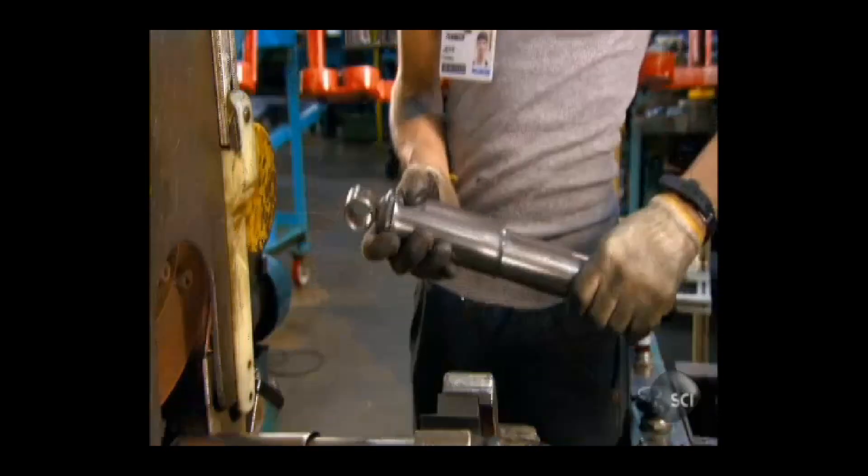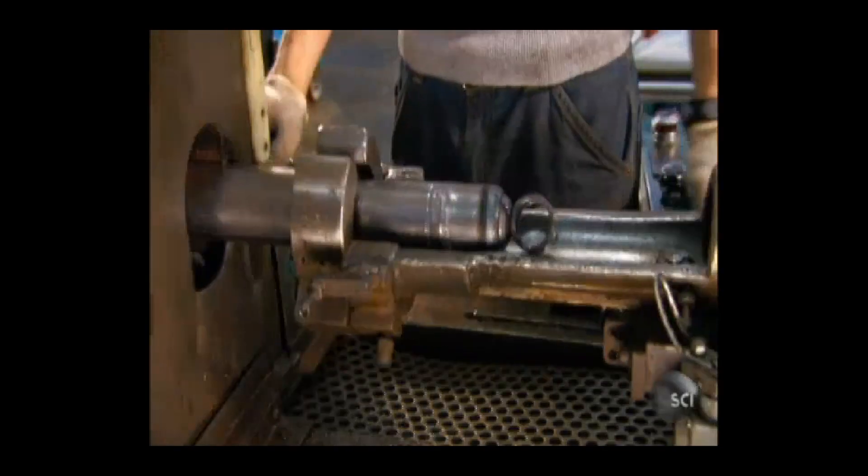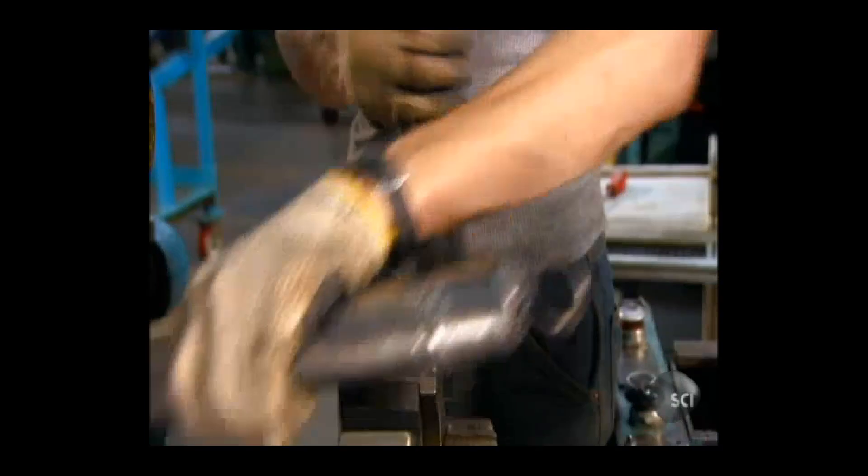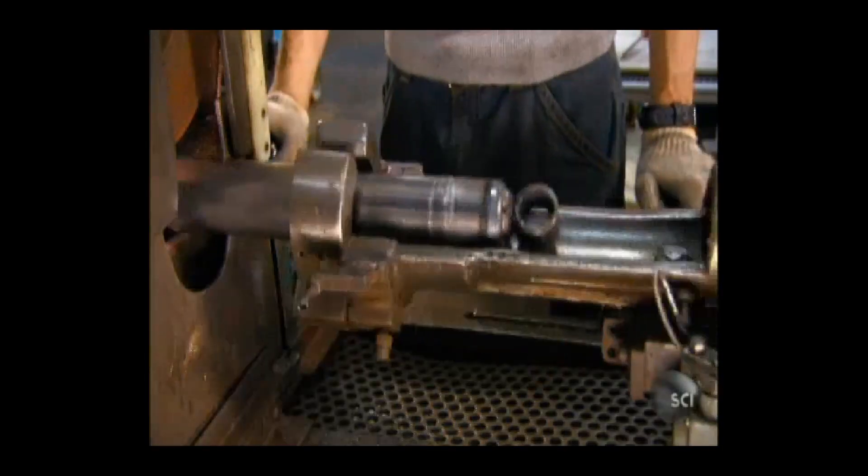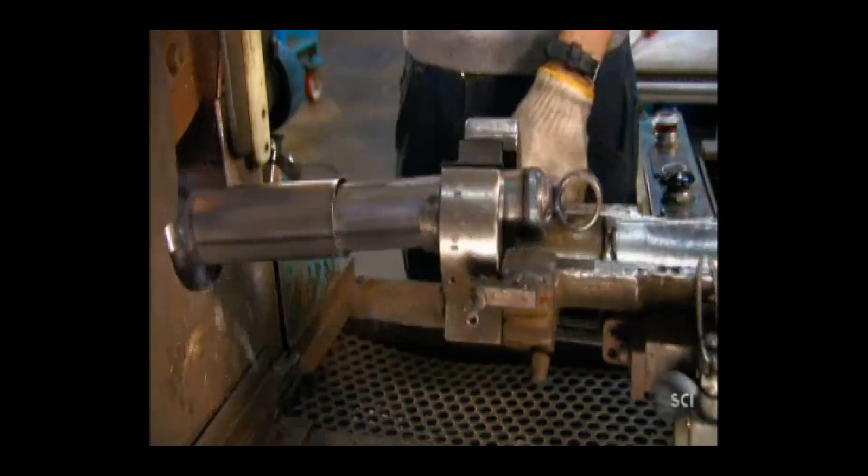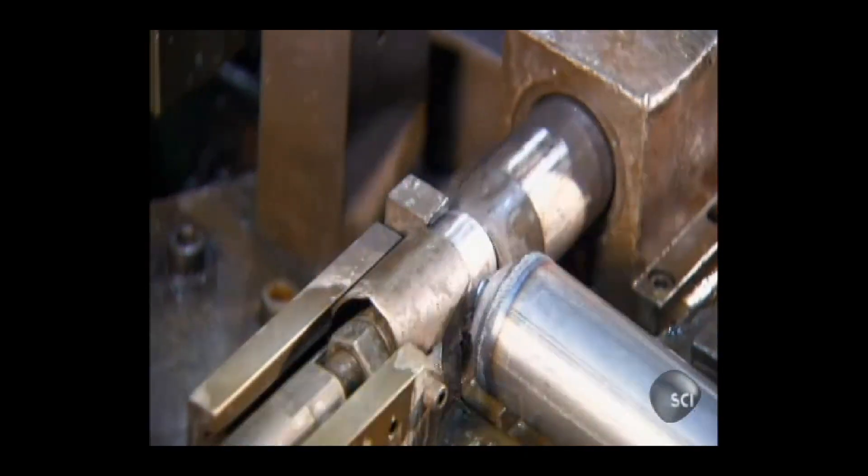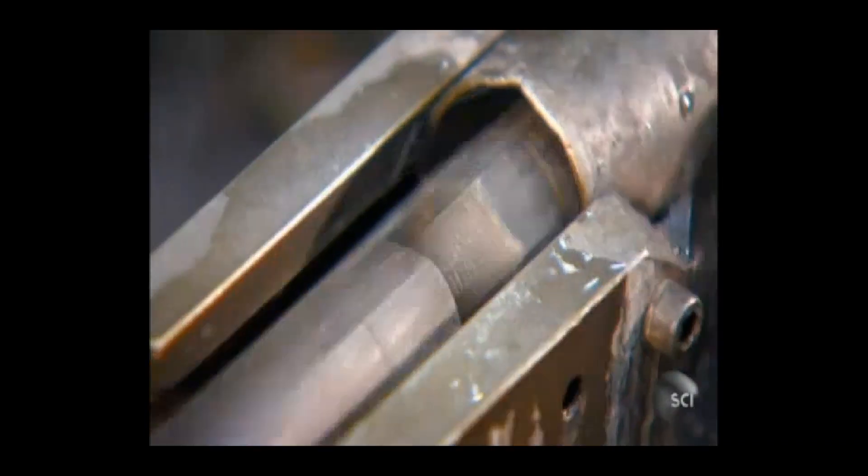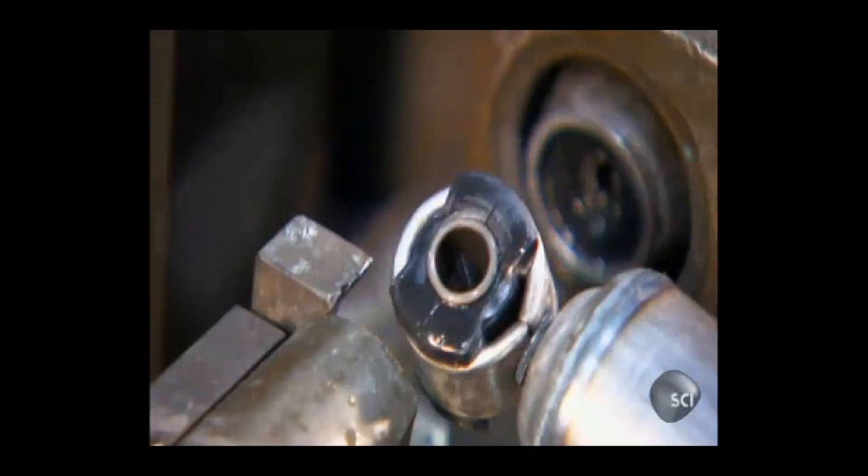Next, workers weld on a dirt shield, a steel casing that prevents dirt from hindering the movement of the piston rod. A piece called the bushing is pressed into each mount. This helps tone down the vibrations coming from the vehicle.